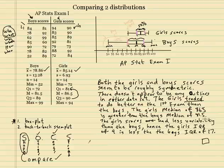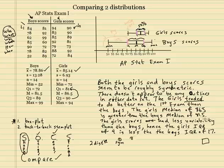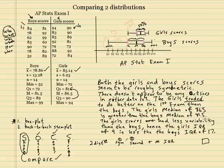One other thing: if you have two distributions and one is symmetric and the other one is skewed, you go ahead and use the median and the IQR. If they're both symmetric, then you could use either one. If they're both skewed, then you would use the median and the IQR. Never compare the median with the mean.